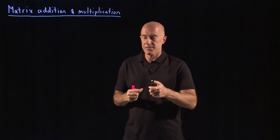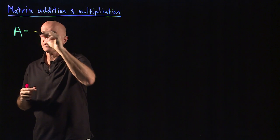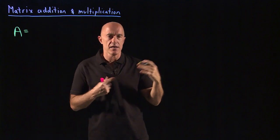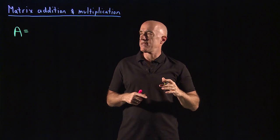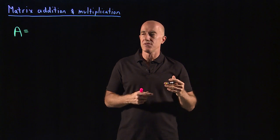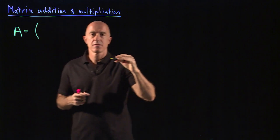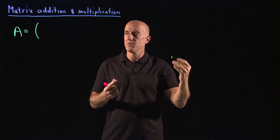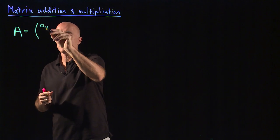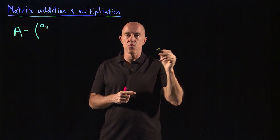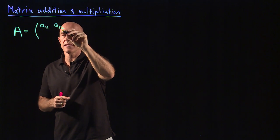So what is a matrix? A matrix can have m rows and n columns. Let me show you with a two by two matrix. A two by two matrix has two rows and two columns. In the first row I'm going to put A11 — the subscript is going to mean row one, column one — and A12, meaning row one, column two.